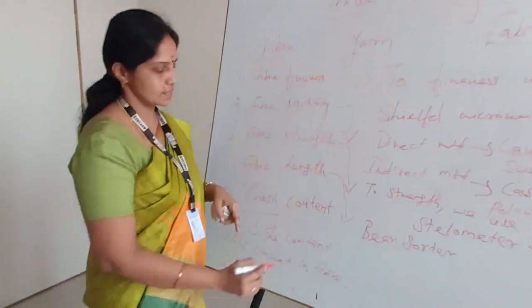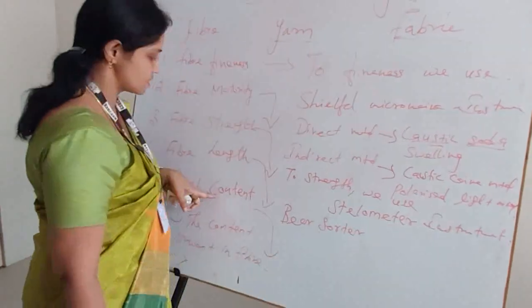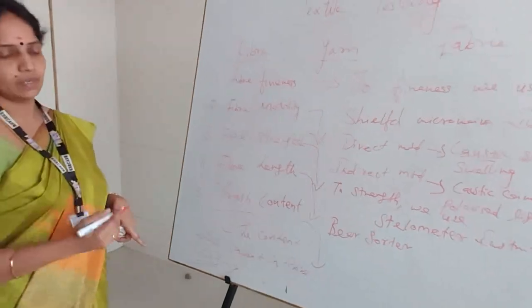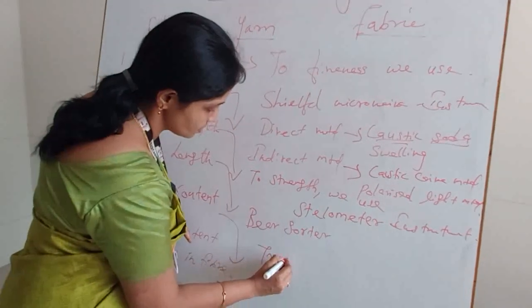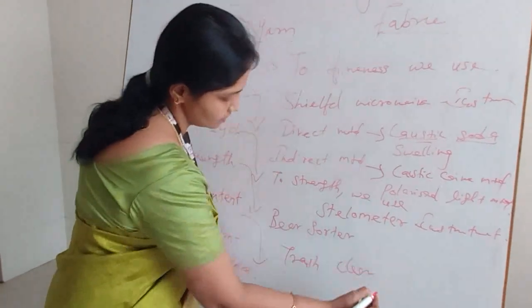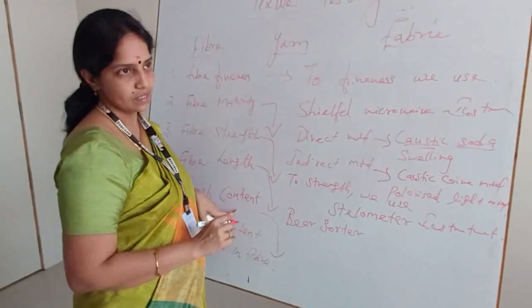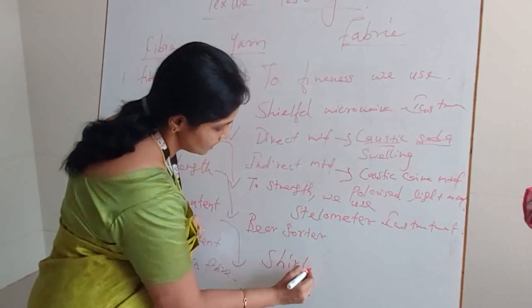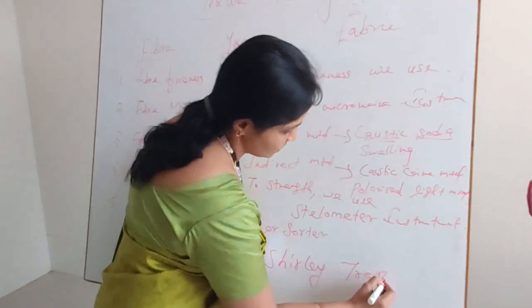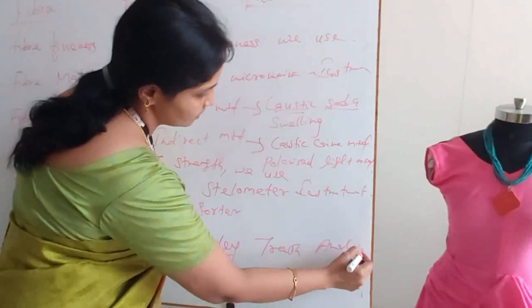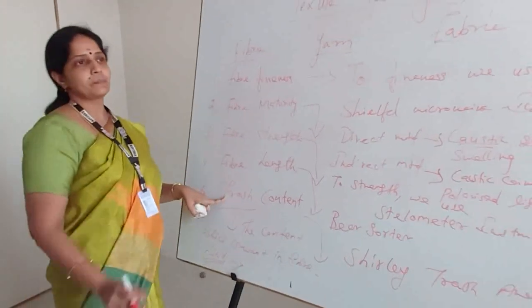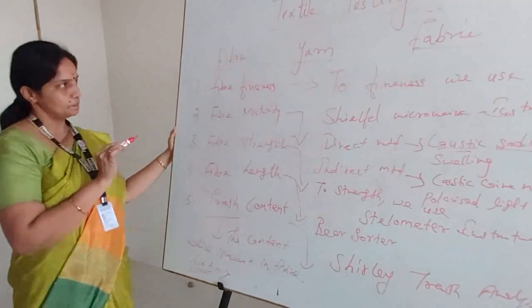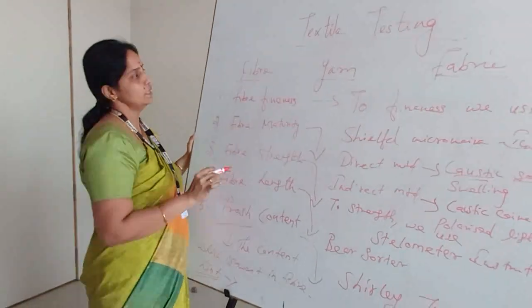The last parameter is trash content. This is used to rectify the length fiber or to remove the trash from the fiber. That instrument is called the trash cleaner analyzer. To identify how much trash is present in the particular fiber, we are using the Shirley Trash Analyzer. This instrument is used to identify the percentage of trash content in the fiber. So these are the primary properties needed for the fiber.